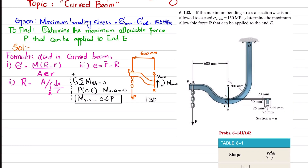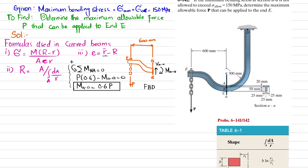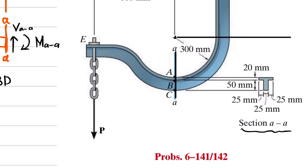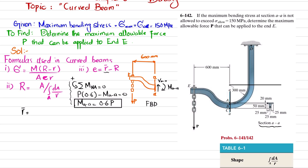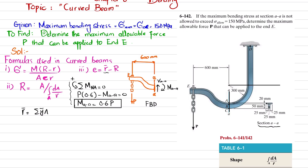Now we find R-dash, which is the distance from the center of curvature to the centroid of the T-section. The T-section is divided into two rectangles: rectangle 1 (the flange) and rectangle 2 (the web). The centroid formula is: R-dash = (y1-bar × A1 + y2-bar × A2) / (A1 + A2).